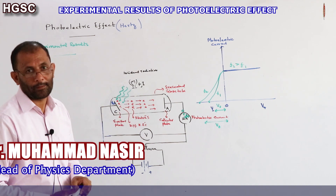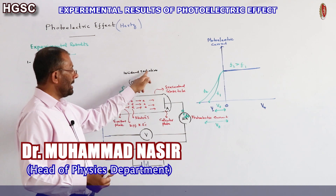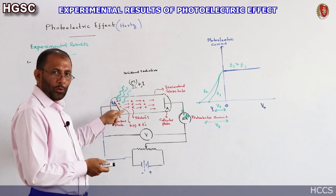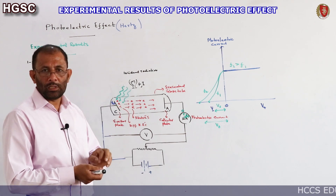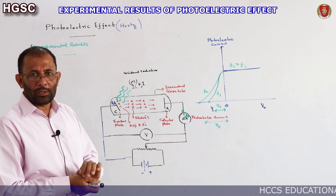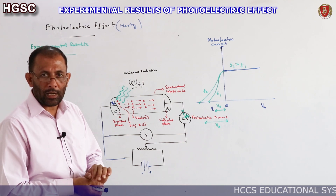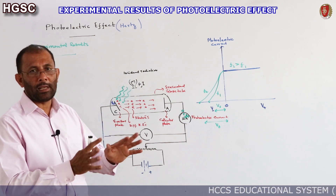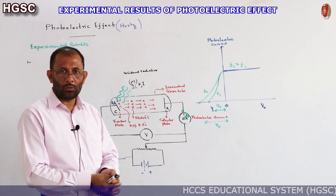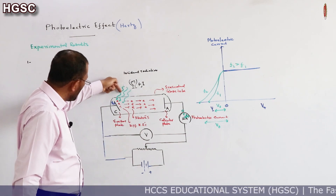First experimental result: if the frequency of incident radiation is less than the threshold frequency of the metal, photoelectric emission will not take place, however intense the light may be.